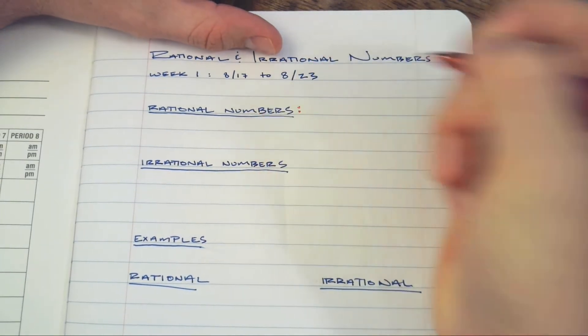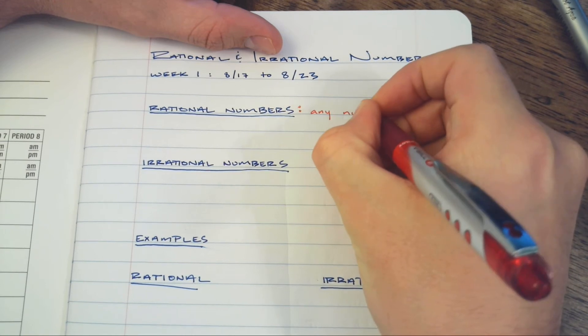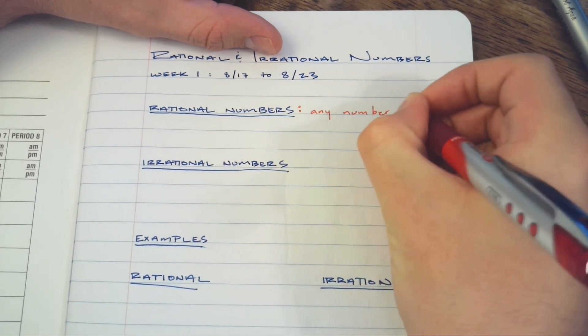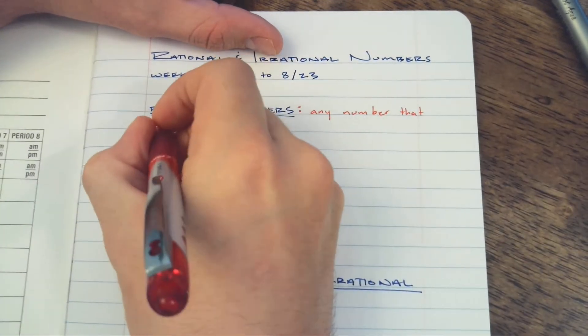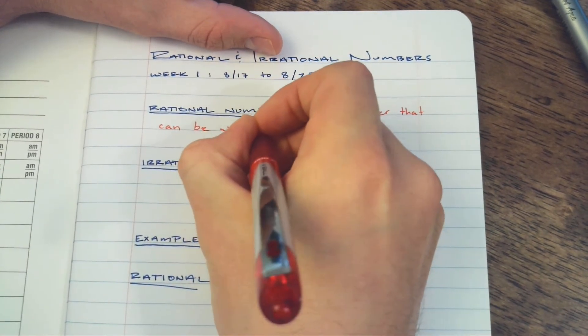Rational numbers - this is really simple and we're going to keep it simple in this class. Rational numbers are any number that can be written as a fraction.